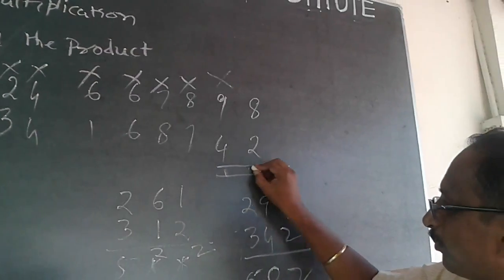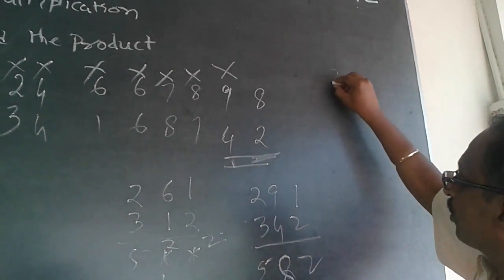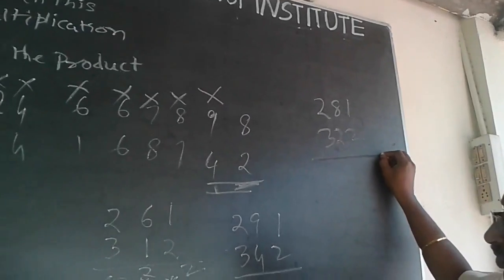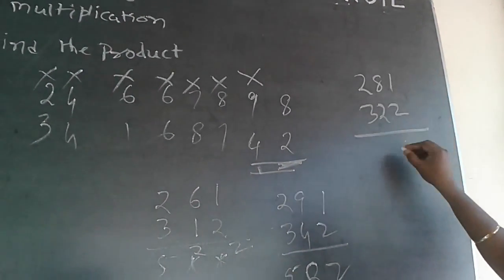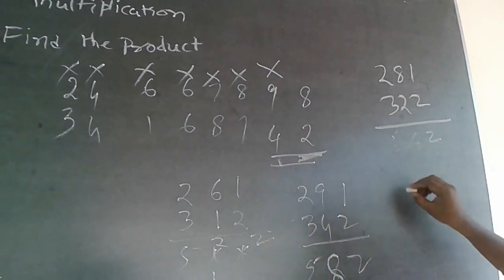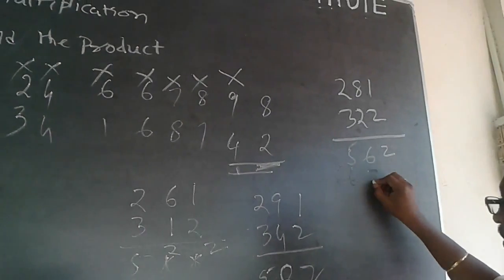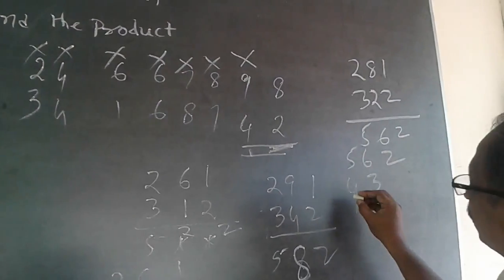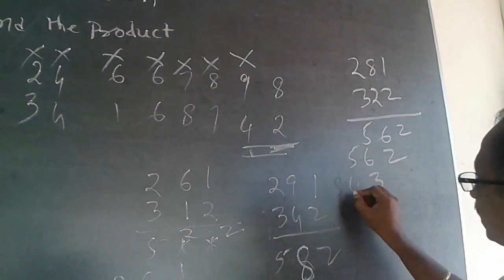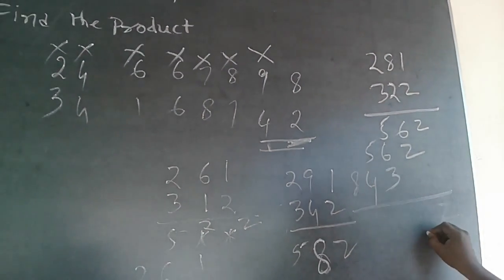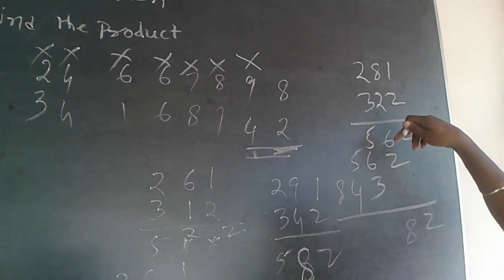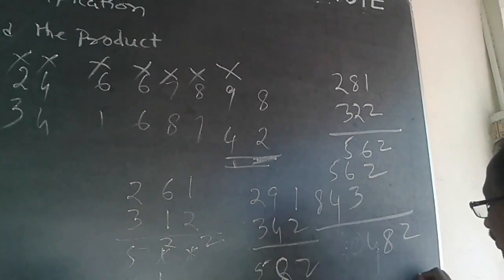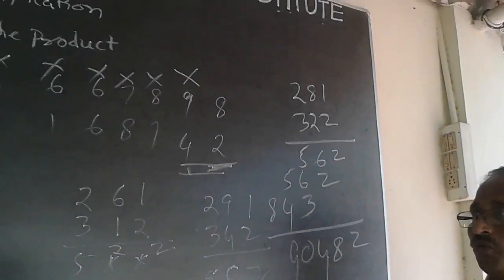The only answer possible is 8 and 2. So it will be 281 × 322. Working it out: 2×1=2, 2×8=16 (carry 1), giving 562. Again 562. Then 3×1=3, 3×8=24, 3×2=6+2=8. When I total this, the answer is 90482.